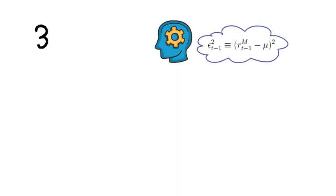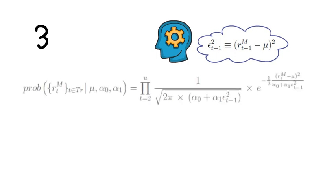So the joint likelihood, meaning the probability of having observed the training set, conditional on the parameters of your model μ, α₀, α₁, is simply the product from T equals 2 to U of...